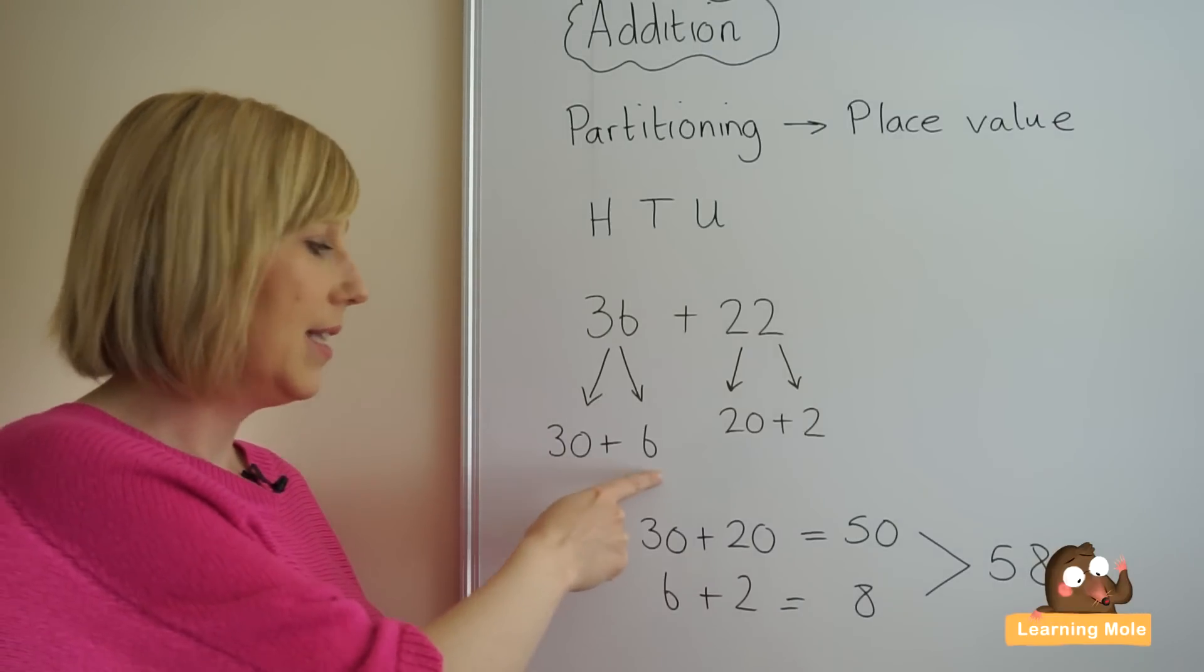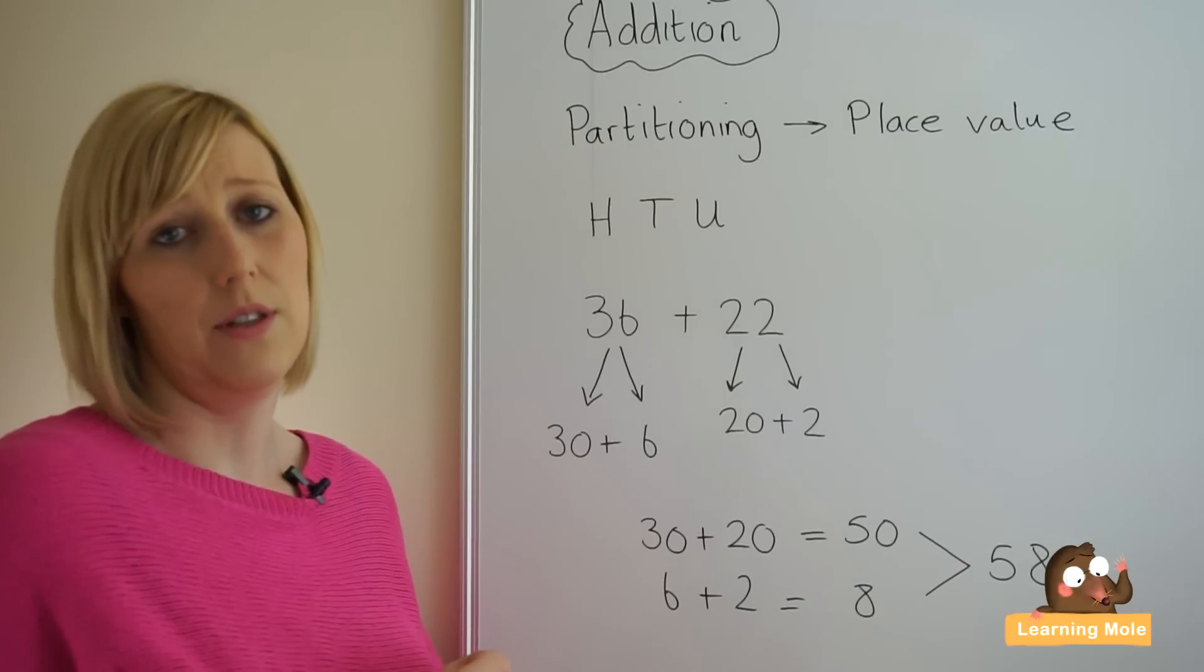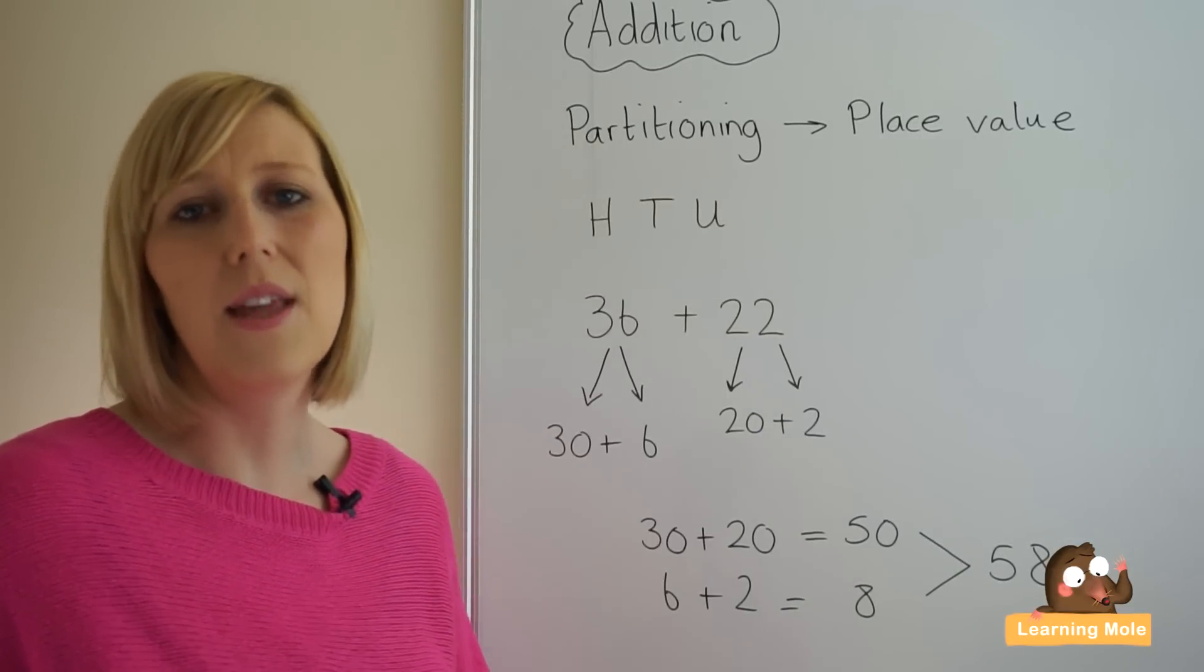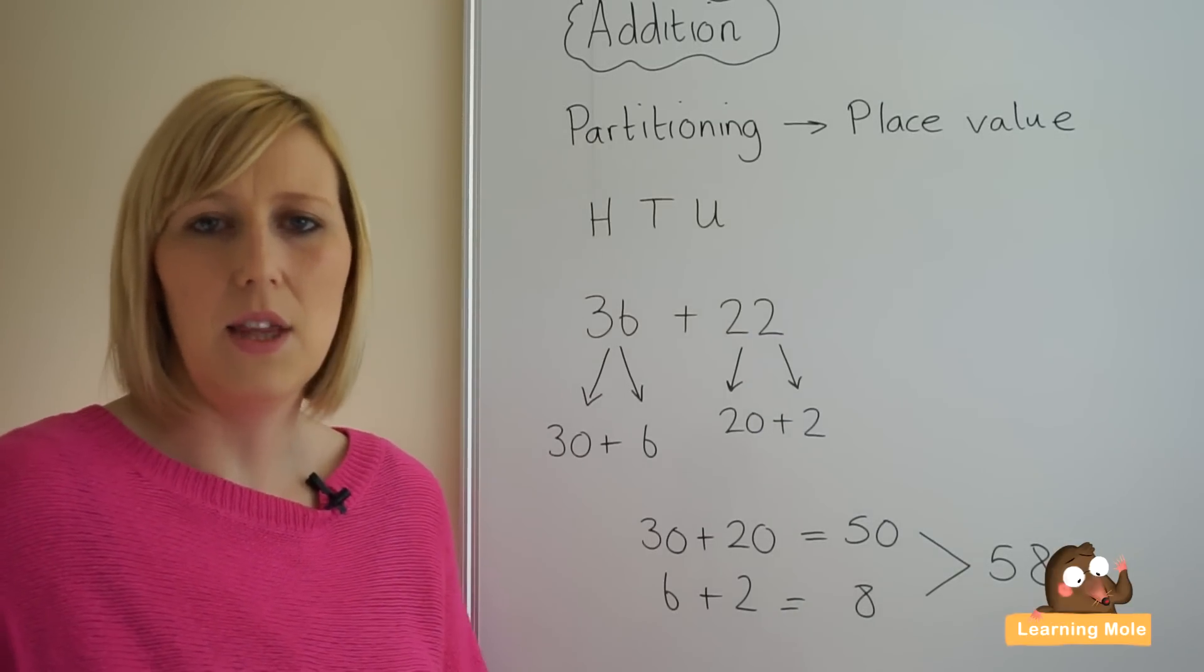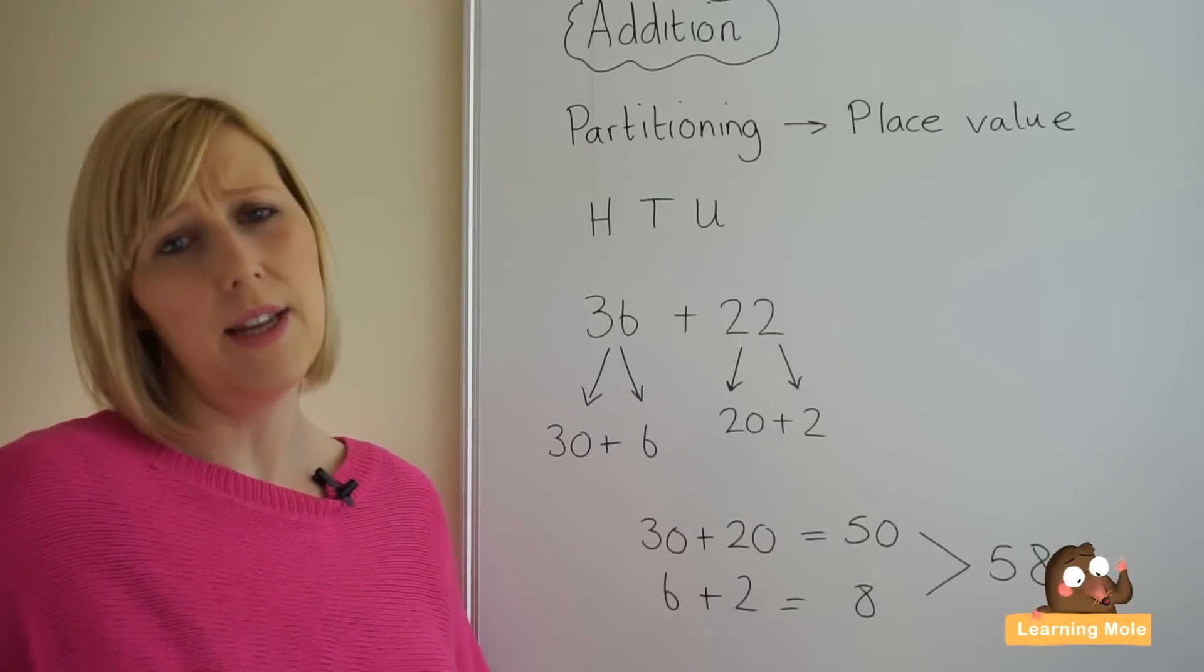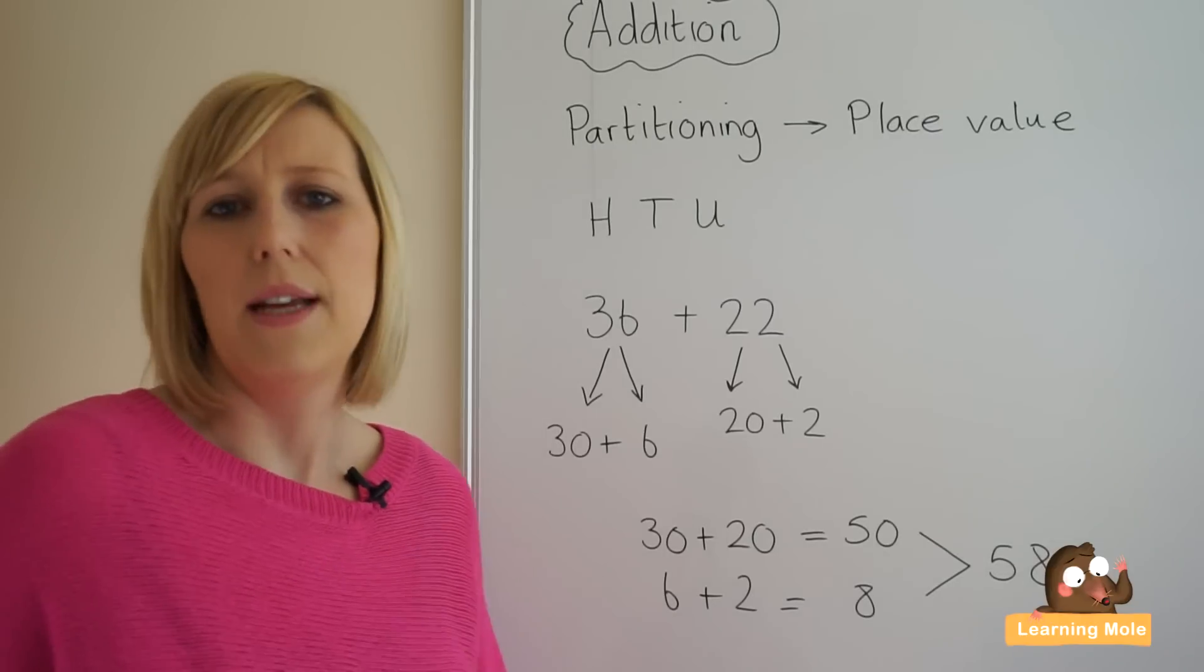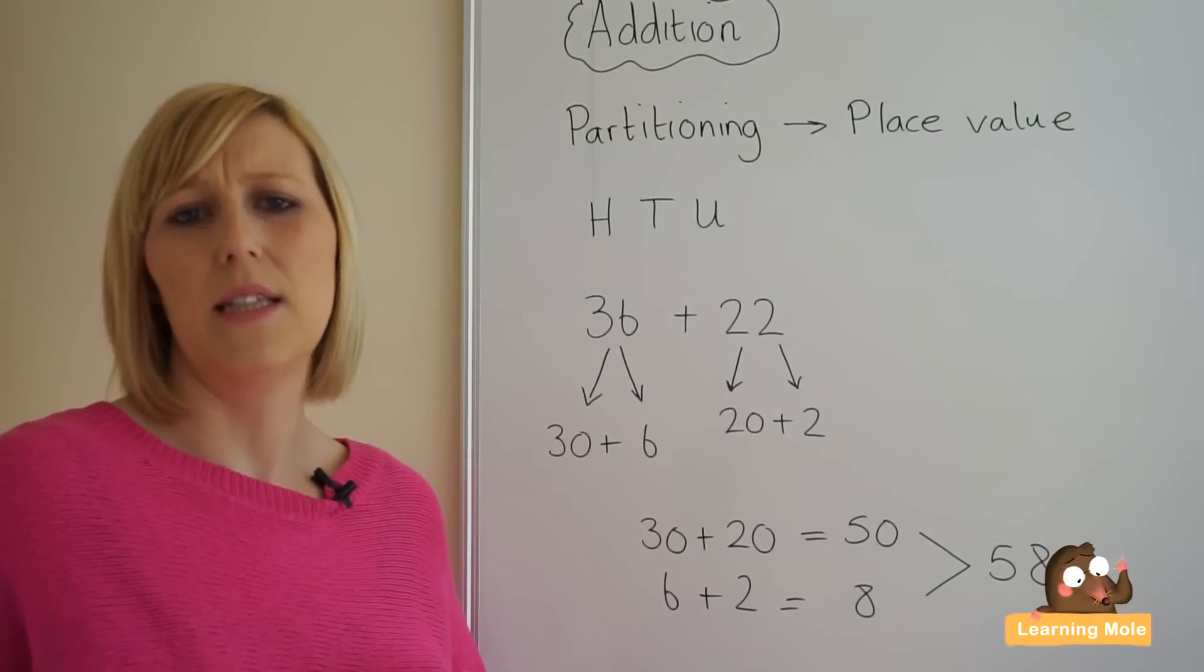Just be careful that your child doesn't write three tens because then it can get very confusing. They think it is a number three, they add the three and the six and they get nine. So just make sure that they actually write what three tens actually represents, the number that it represents, so it's 30.